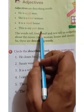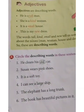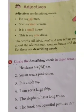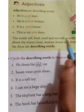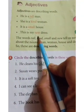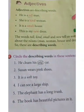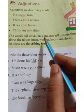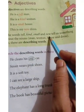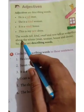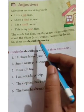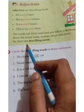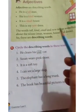This is my new dress. How is the dress? Dress कैसी है? Old है, new है, pretty है — कुछ भी. तो new क्या हो गया? Describing word. So, the words tall, kind, small and new tell us something about the nouns man, woman, house and dress. So these are describing words.